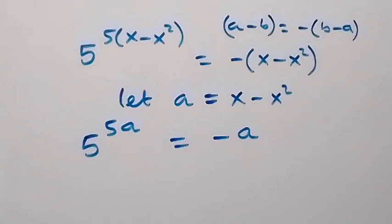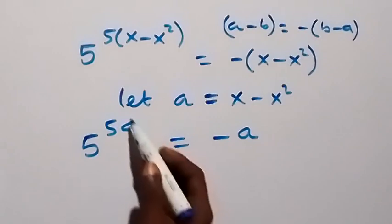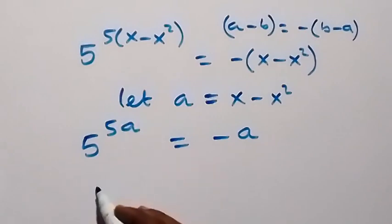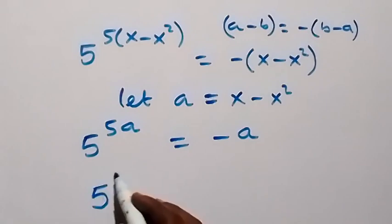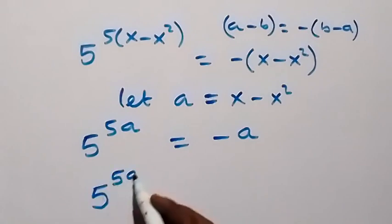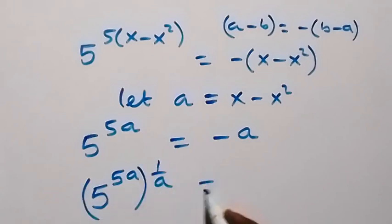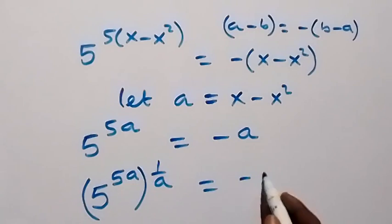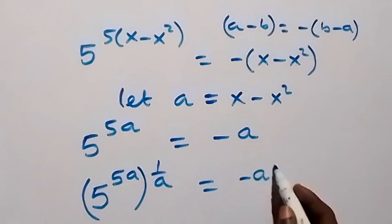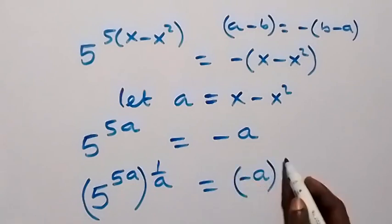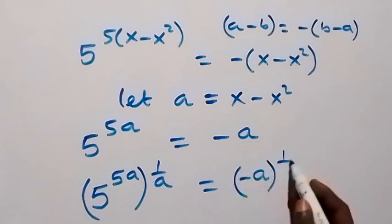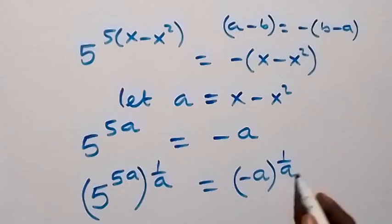To remove this a on this side, let's raise both sides to power 1 over a. So we have 5 raised to power 5 into a, then raised to power 1 over a, equals to minus a raised to power 1 over a as well.